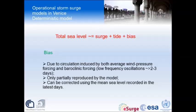The bias is due to different components including average wind-pressure effects and baroclinic forces — essentially a seasonal mean sea level correction. The best way to correct for it is to compute it from the last two to three days of observations and simply add it to the term in order to compute the total sea level.